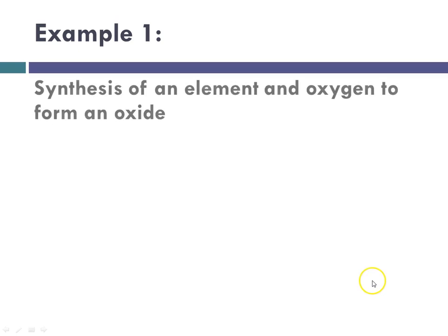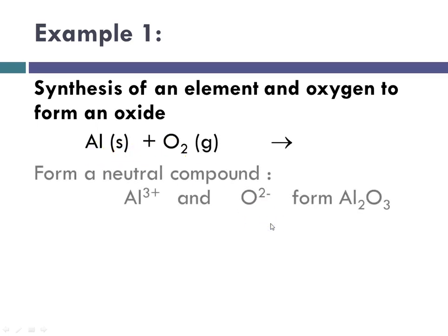So examples. Synthesis of an element and oxygen to form an oxide. So again, the example I showed before of aluminum with oxygen. We have to remember the charges. Aluminum is a group 3 metal, so its charge will always be plus 3. Oxygen is a group 6 nonmetal.